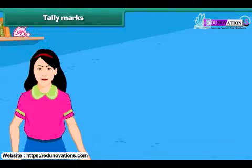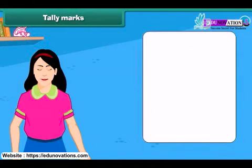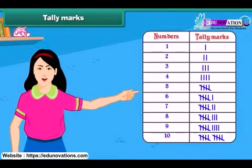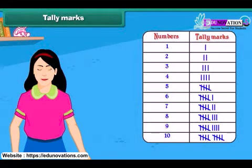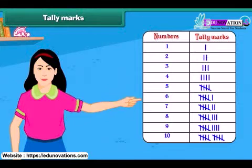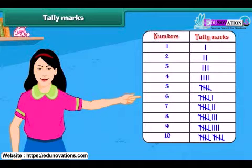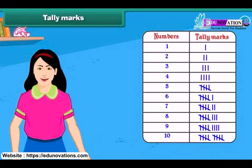Tally marks are one of the easiest and quickest methods used for data handling. A tally mark is counting the objects or activity in groups of 5. A single vertical line represents a single object.